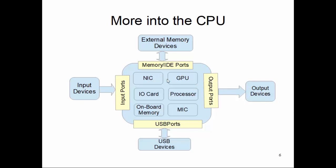But there are also bidirectional ports. For example, external memory devices like your hard drive, whether it is a rotating device or a solid state memory device, are bidirectional — the CPU can send data to store or retrieve data back as needed to process information.